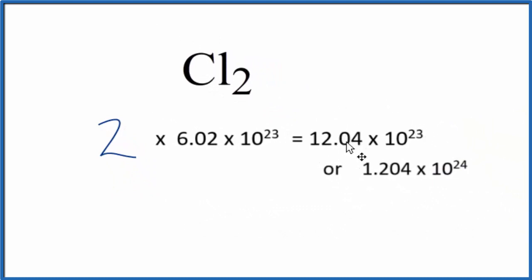So we have 12.04 times 10 to the 23rd chlorine atoms in one mole of chlorine gas. This is Dr. B with the number of atoms in Cl2, chlorine gas. Thanks for watching.